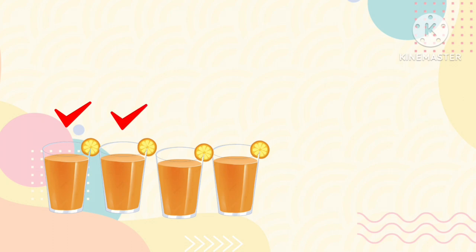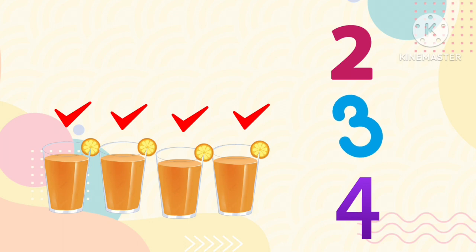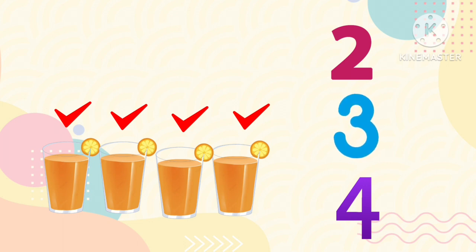How many juices are here? Shall we count? One, two, three, four. There are four juices. Is it four? No. Is it four? No. Is it four? Yes, it is four.